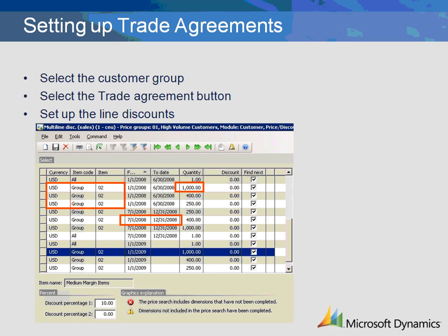The Find Next check box is very important when using quantity breaks. It is used to indicate that Microsoft Dynamics AX should search the trade agreements to find the best price. If it is not checked, then the system will stop at the first discount on the trade agreement. In our example, if Find Next is not checked for medium margin items, then a 2.5% discount will be granted regardless of the quantity — Microsoft Dynamics AX will not find the next discount. Click the Discount Percentage fields in the bottom left-hand corner to input the discount percentages at each level. If you instead want to use dollar amounts, input the information in the table above under Discount.